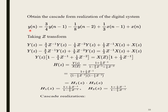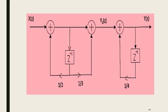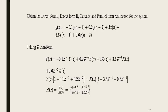For cascade form realization of a digital system: given a difference equation, take the Z transform on both sides to obtain the transfer function. Split it into two components H1(Z) and H2(Z). For the cascade structure, direct form 2 is preferred as it reduces the number of computations and elements. The same problem is used to demonstrate all four forms: direct form 1, direct form 2, cascade form, and parallel form realization.